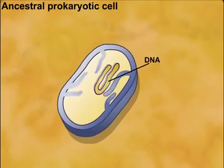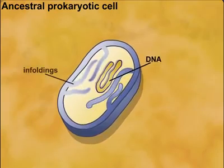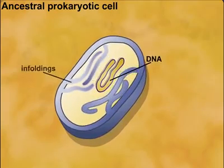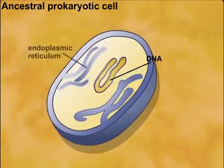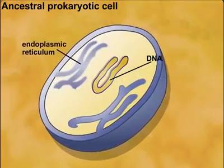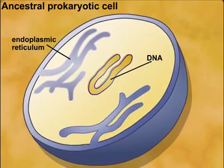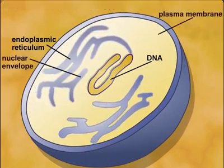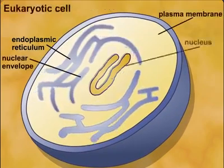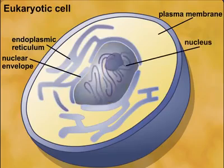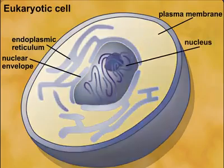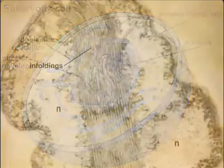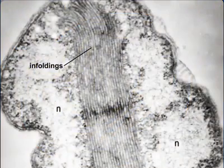The eukaryotic internal membrane system called the endoplasmic reticulum and the nuclear envelope may have evolved from infoldings of the plasma membrane in an ancestral prokaryotic cell. Such infoldings are common in modern prokaryotic cells.